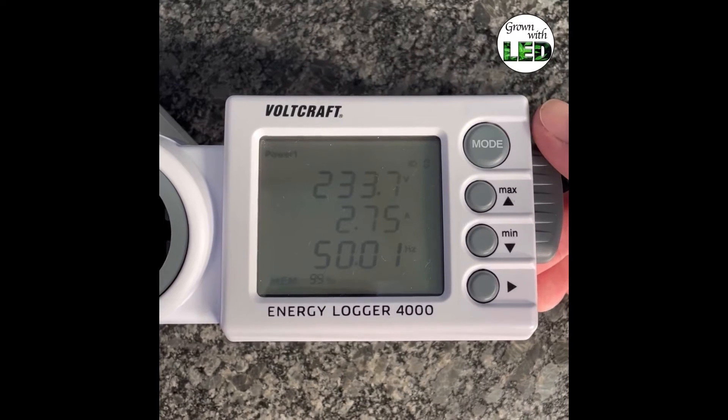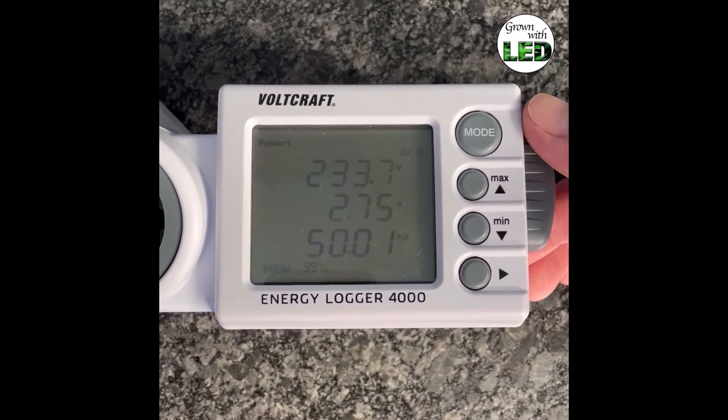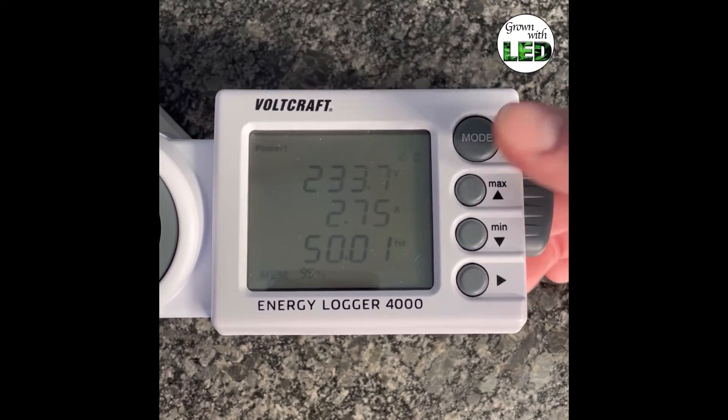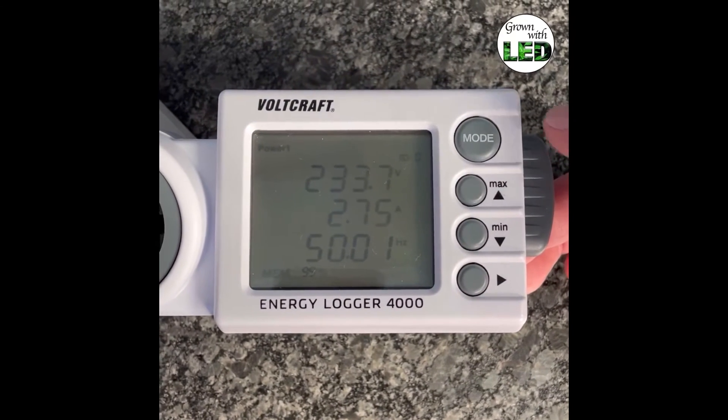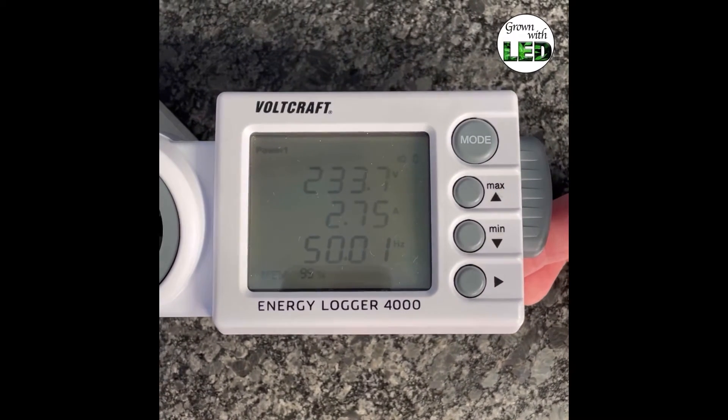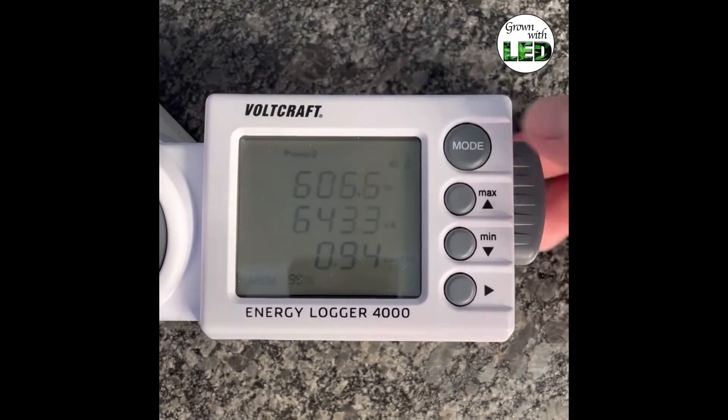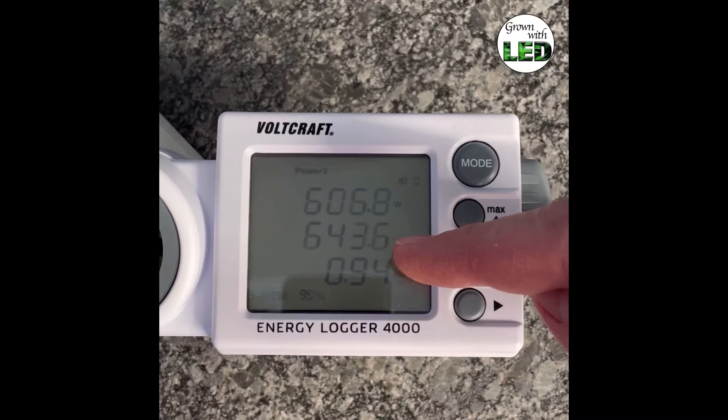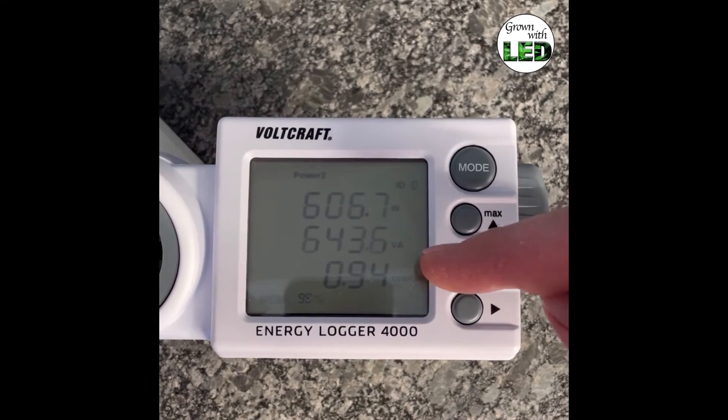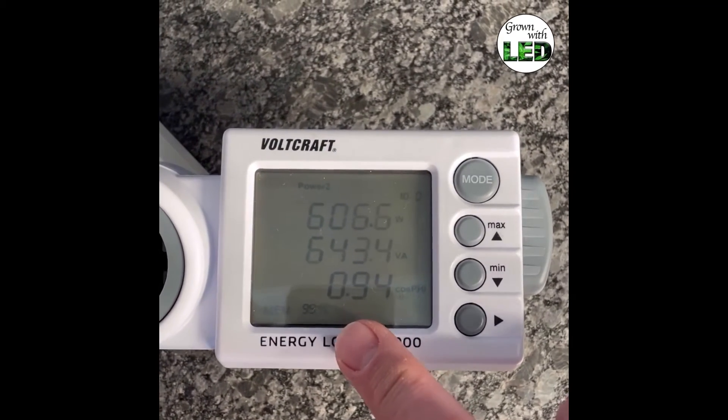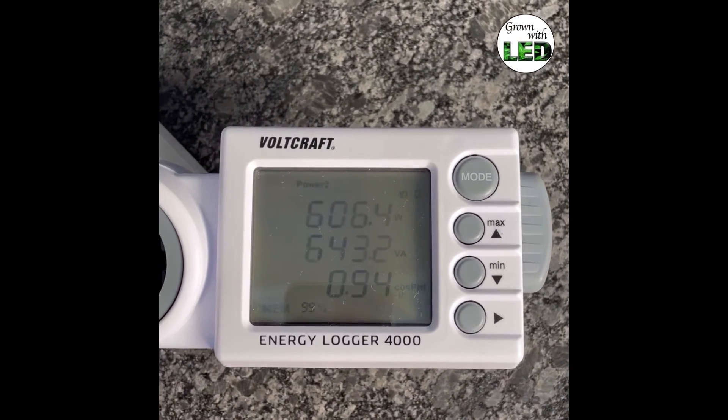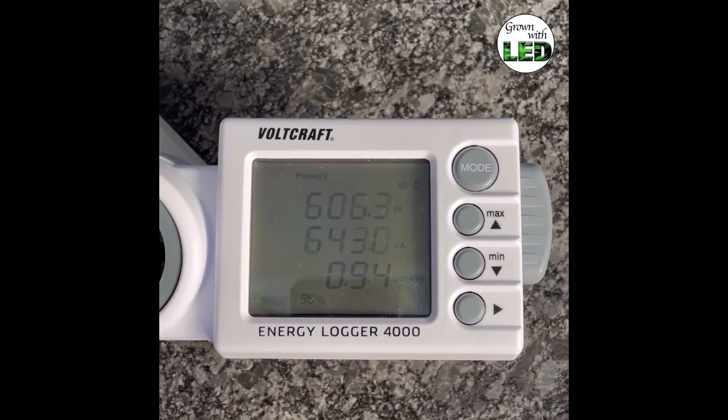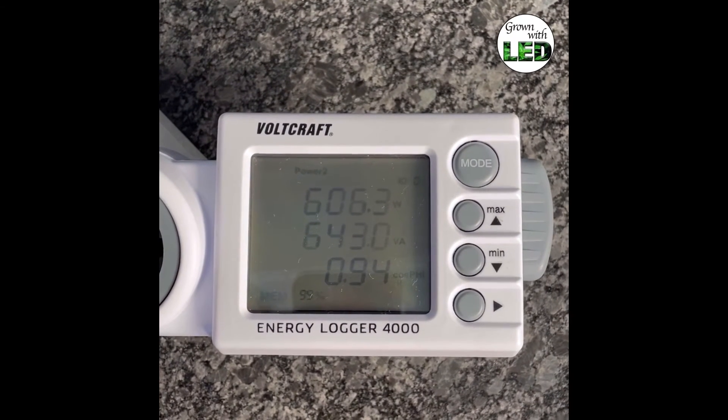This is the power measurement of the Lumotech SUSE 600 Watt Pro. We do it with our Waltcraft Energy Logger 4000. You can see at 233 volts, she draws a current of 2.75 amps, and she uses an actual power of 606.7 watts, that's 643.6 VA volt ampere at a power factor of 0.94. So 606 watts, that's 10% more than the actual power is given, that's what she actually draws in use after running for half an hour stationary.